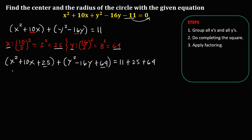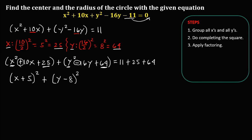Then apply factoring. To factor the x equation: factors of x squared are x times x. Since the middle term is positive, and factors of 25 are 5 times 5, we have x plus 5, squared. For the y equation: factors of y squared are y times y. Since the middle term is negative, and factors of 64 are 8 times 8, we have y minus 8, squared. That equals 11 plus 25, which is 36, plus 64, so the right side is 100.